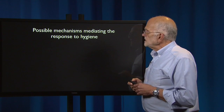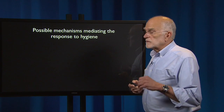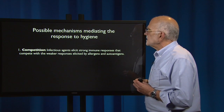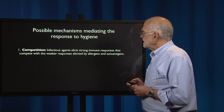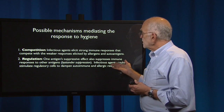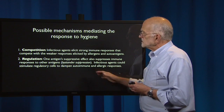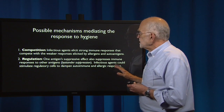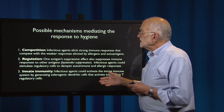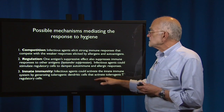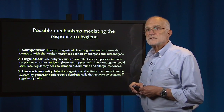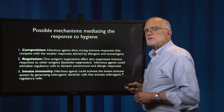What are the mechanisms that might mediate this response? The first is competition: infectious agents could elicit strong immune responses that compete with weaker responses elicited by allergens and autoantigens. Second is regulation: one antigen's suppressive effect also suppresses immune responses to other antigens — bystander suppression — so infectious agents could stimulate regulatory cells to dampen autoimmune and allergic responses. Third is innate immunity: infectious agents could activate the innate immune system by generating tolerogenic dendritic cells that activate tolerogenic T regulatory cells, a more active manipulation of signaling pathways.